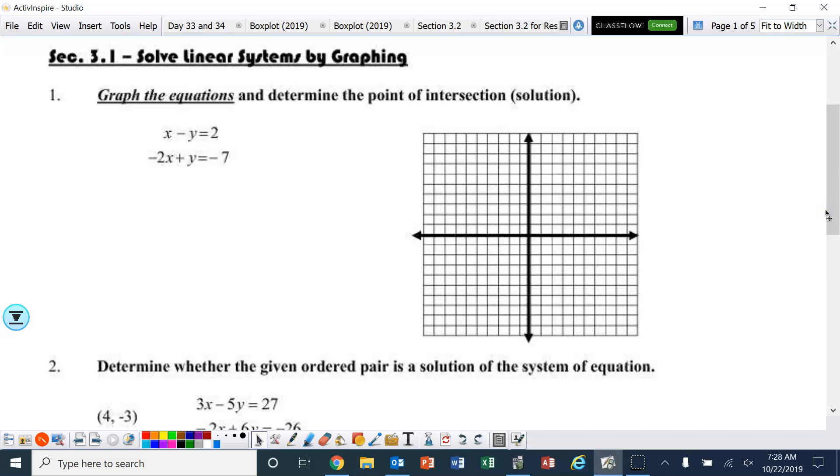Number one, graph the equation and determine the point of intersection. For these, I'm going to solve for y for both of them and then graph them using the slope-intercept form. We've got x minus y equals 2. Going to get y by itself, take away x. So, negative y equals negative x plus 2. Got to get rid of that negative, so divide by negative 1.